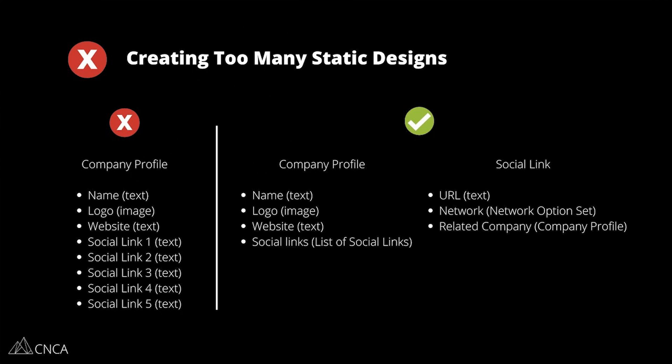Compare it to the structure on the right. We're introducing a second data type to help, and it's much more effective. The company profile record on the right has just the name, logo, and general website, but there is a relationship field that links out to a list of social link records. Because the company is now in control of creating however many social links they need for whichever networks they're on, this is a much more dynamic structure. You do not need to anticipate a certain number of links. Be careful with creating too many static designs — there are cases where static makes sense, but be mindful of how scalable those structures might be.